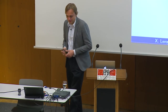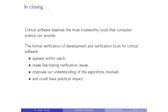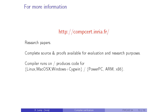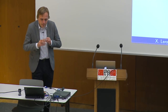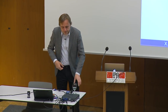To conclude: critical software deserves the most trustworthy tools that computer science can provide. Formal verification of development tools like compilers and code generators, as well as verification tools for critical software, appears possible, raises fascinating verification issues, improves our understanding of why classic compiler algorithms work, and could have real practical impact. For more information about CompCert, visit the project website where research papers and a complete distribution are available for evaluation and research purposes.